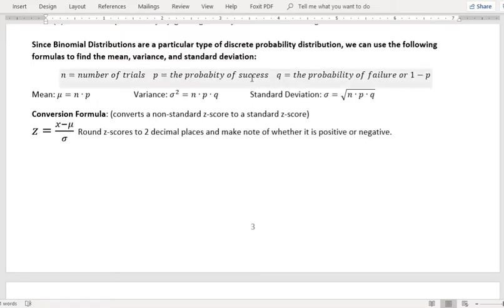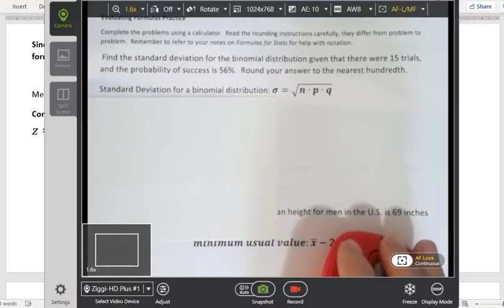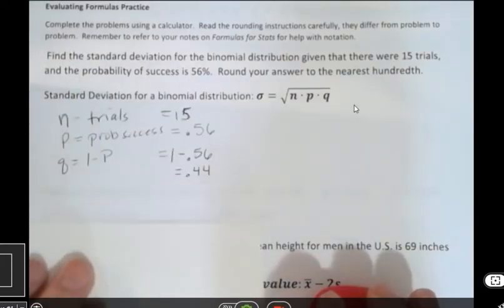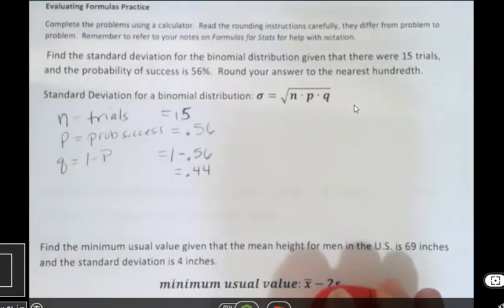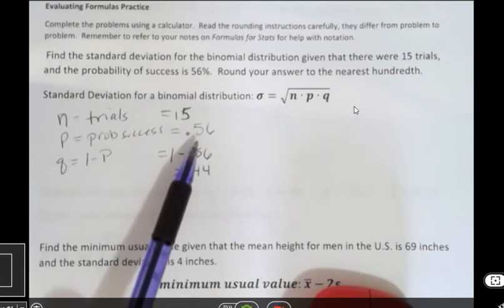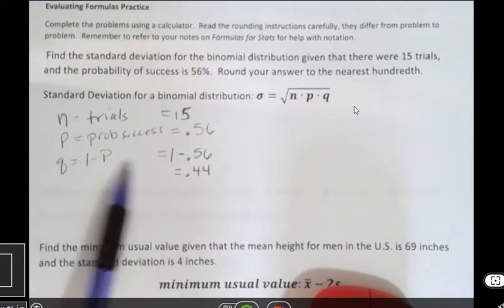So if the probability of success was 20%, the probability of failure would be 80%. So knowing that, I'm going to go back into this assignment, and now I know these things. I know that N is the number of trials, which we were given as 15. P is the probability of success, which we were given as 56%, which I changed to a decimal.